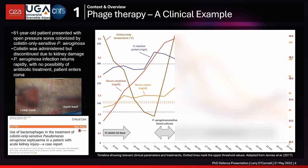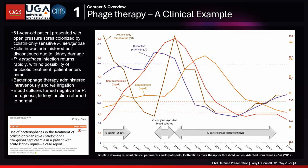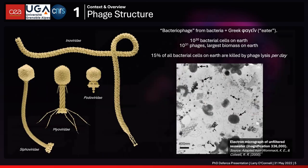At that point, bacteriophage therapy was started, and very quickly clinical parameters improved — the fever disappeared and the antimicrobial-resistant infection was eliminated. This is an example of a very promising result from phage therapy in a case where antibiotics were no longer an option. So what are phages? Phages are viruses that replicate inside bacteria, killing them.